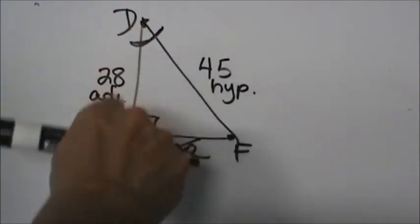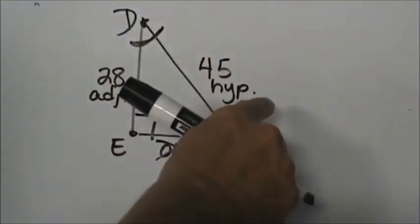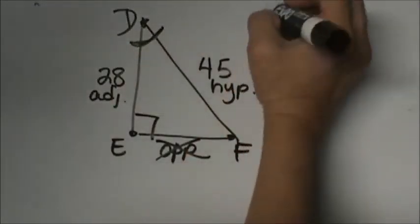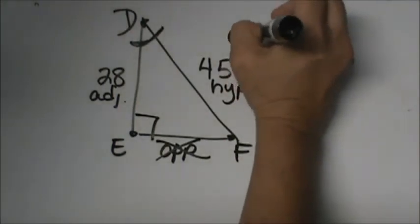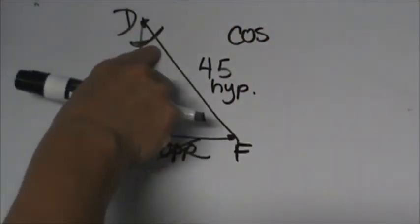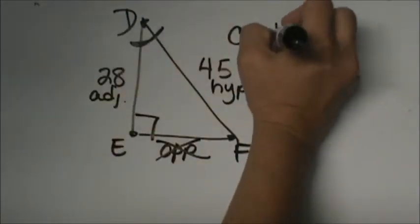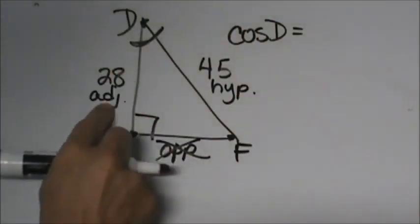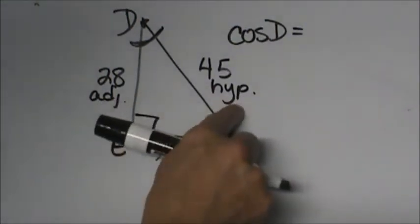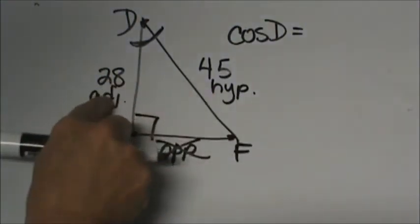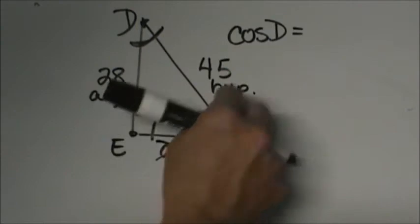Which trig function uses adjacent and hypotenuse? Cosine. We are going to use the cosine function. We don't know the angle measure so the cosine of D is equal to adjacent over hypotenuse. So I'm going to put 28 over 45.